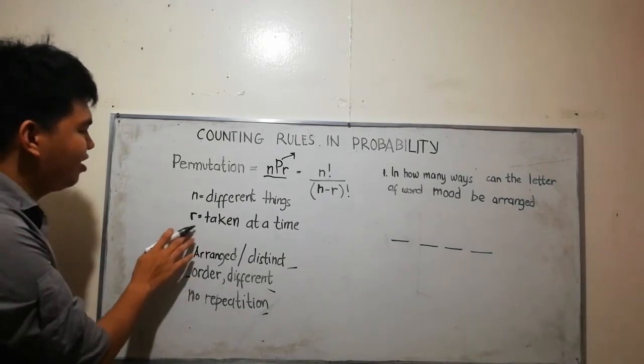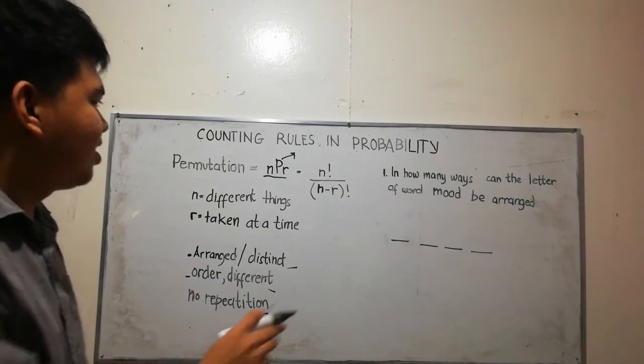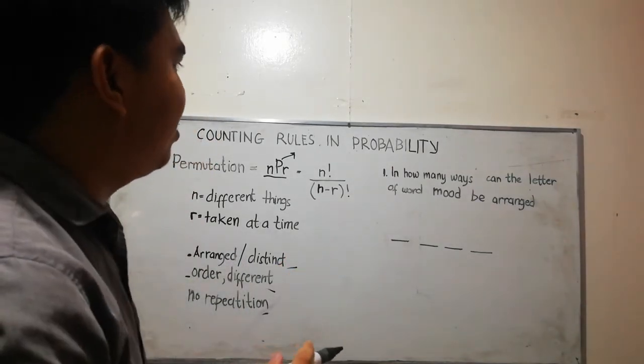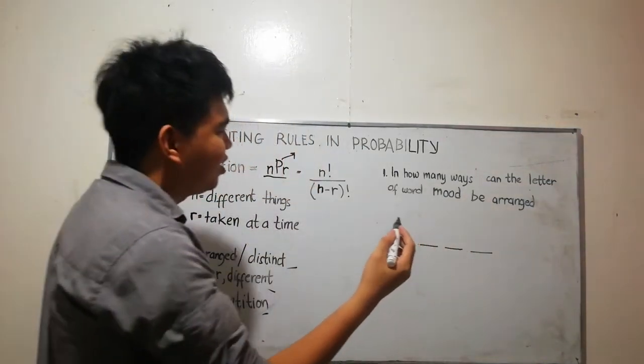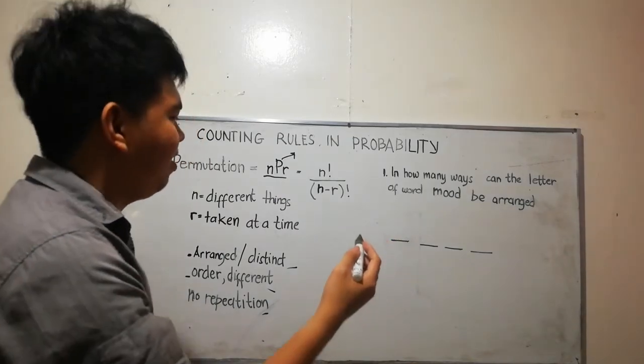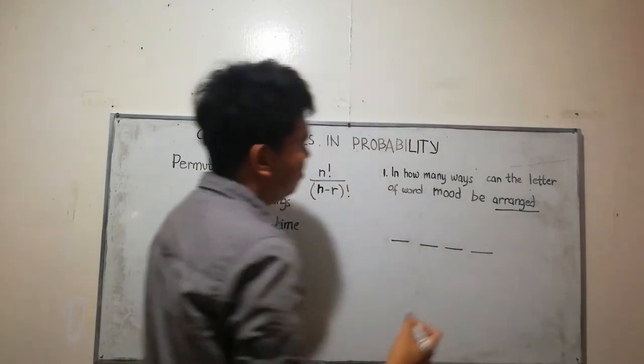Sample problem number one: In how many ways can the letters of the word MOOD be arranged? You can see the word 'arrange' here, so this is a permutation problem.